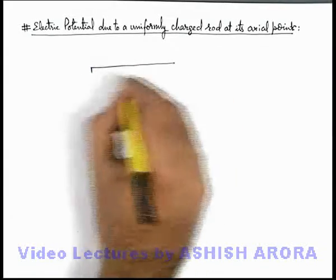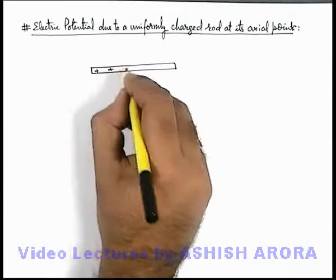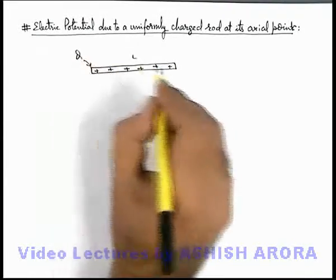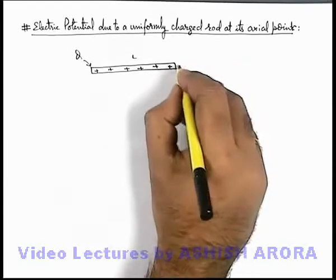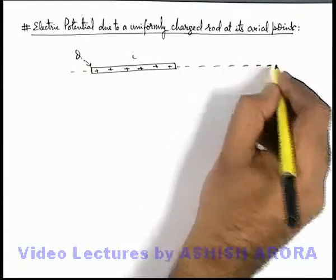Say we have a uniformly charged straight rod which is of length l and it is charged with a total charge q. At an axial point, we know that the line on which the rod is placed is called the axis of the rod.